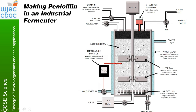Here's an example of a diagram of an industrial fermenter. This one is a little more complicated than the one in your book because it has labels on the side explaining what's happening. Starting here, we have the culture medium — this would be our fungus, our Penicillium notatum — and we need to make sure it's getting plenty of food inside.